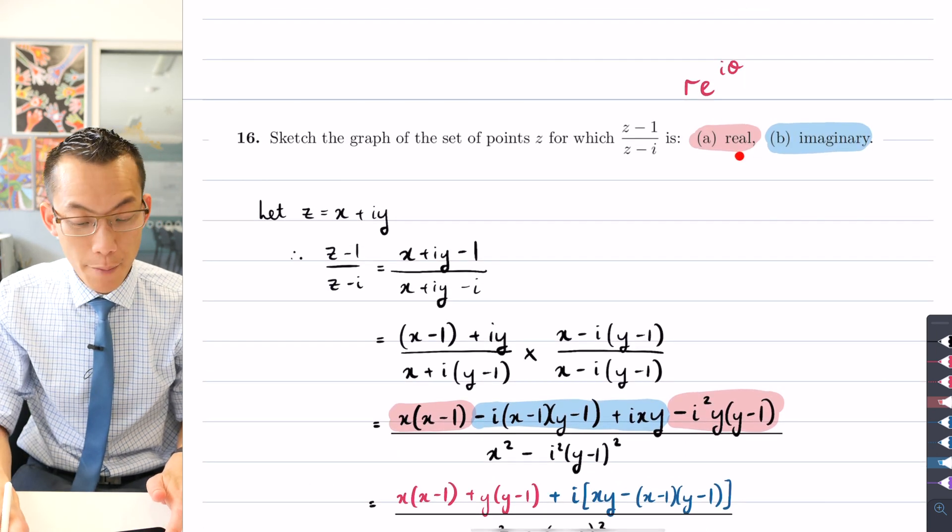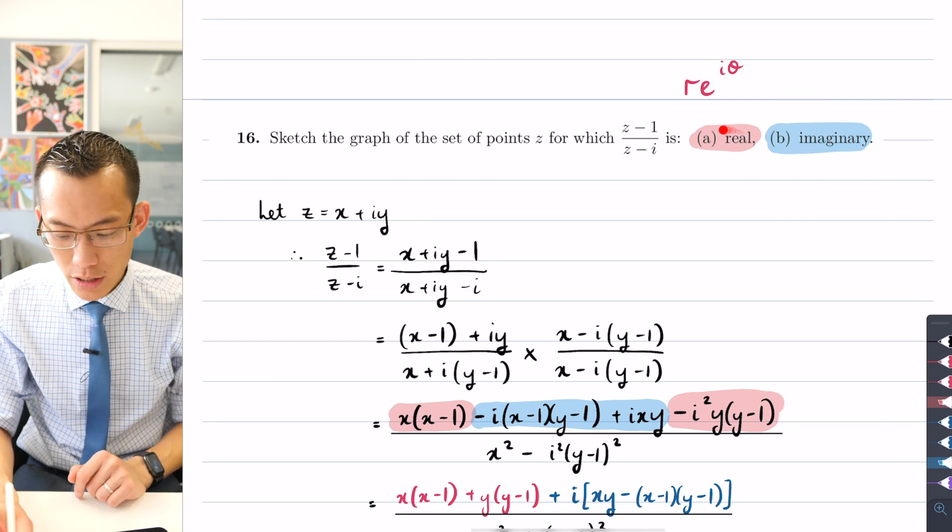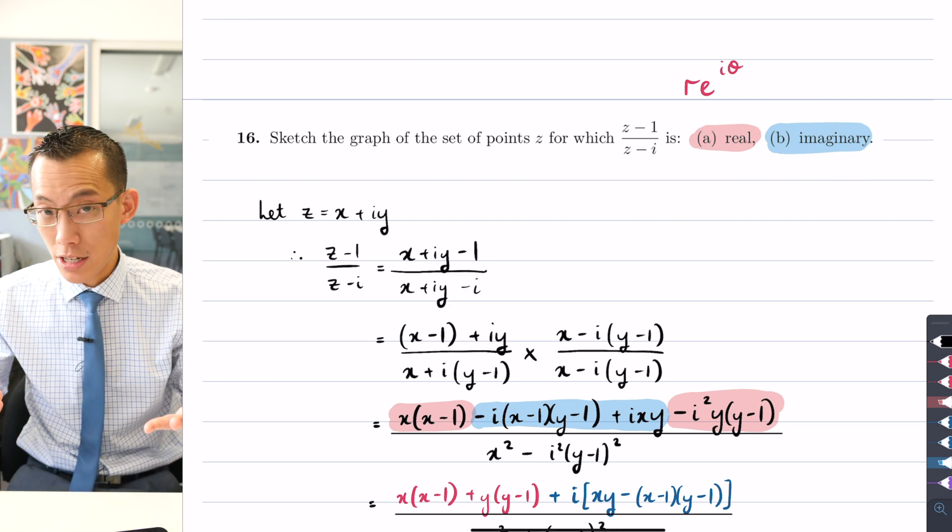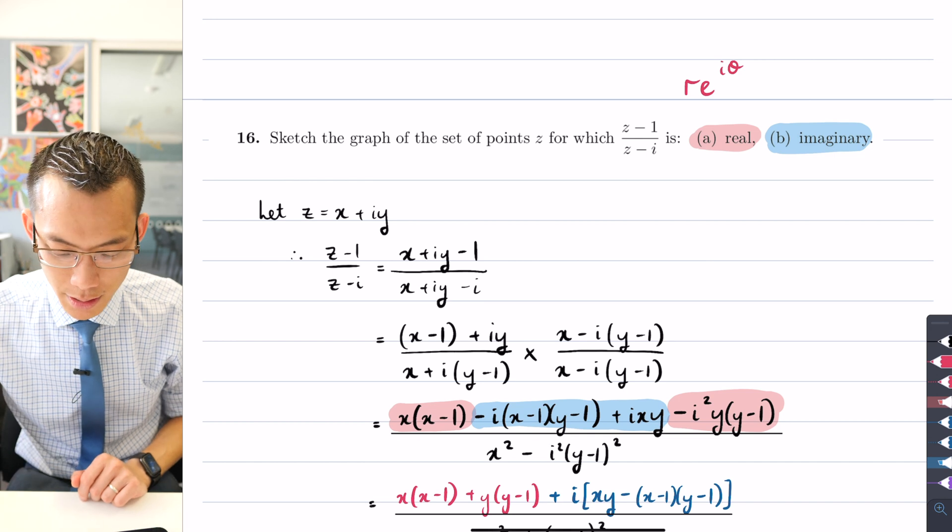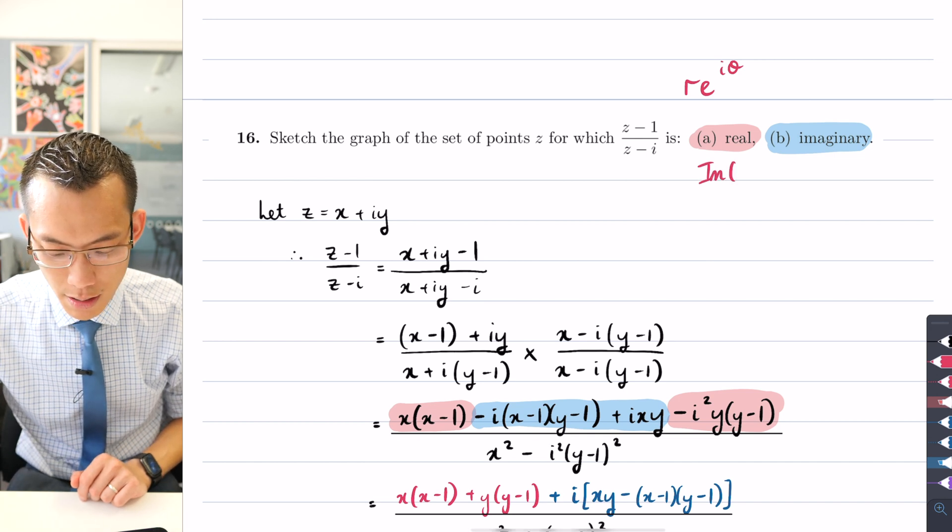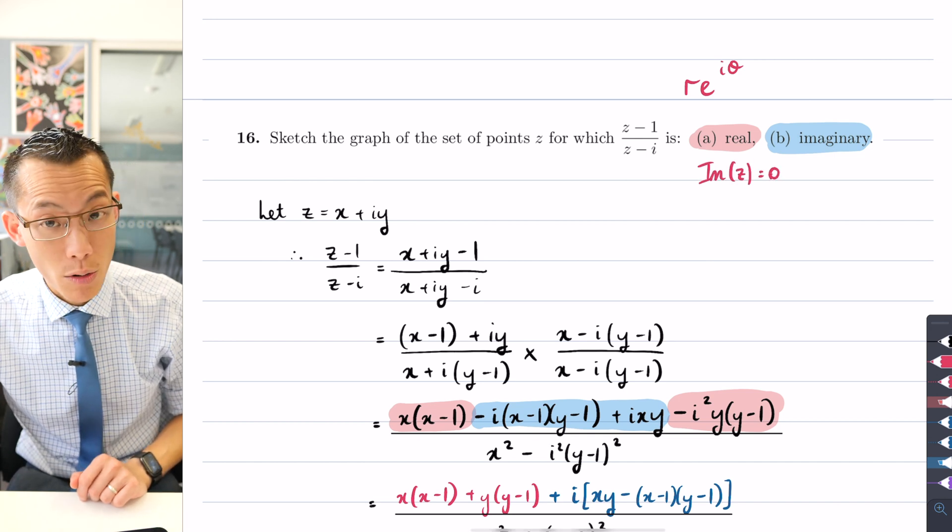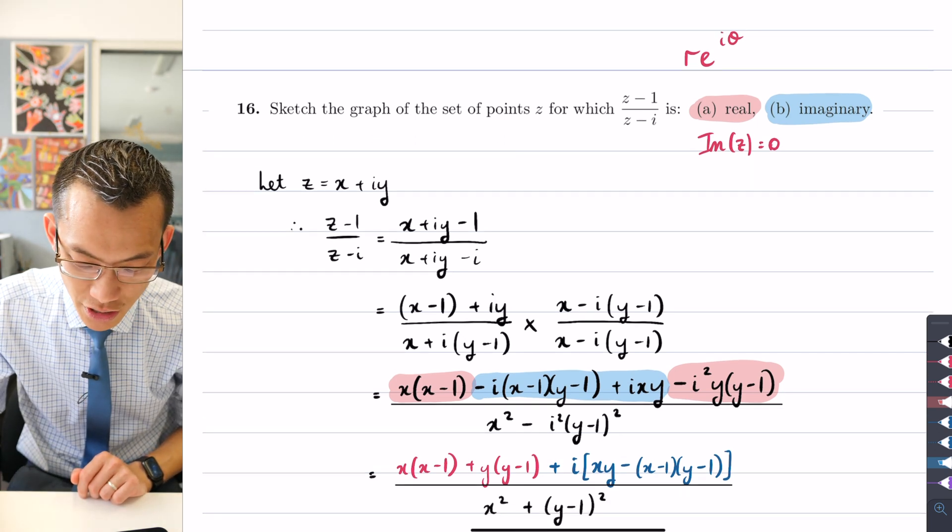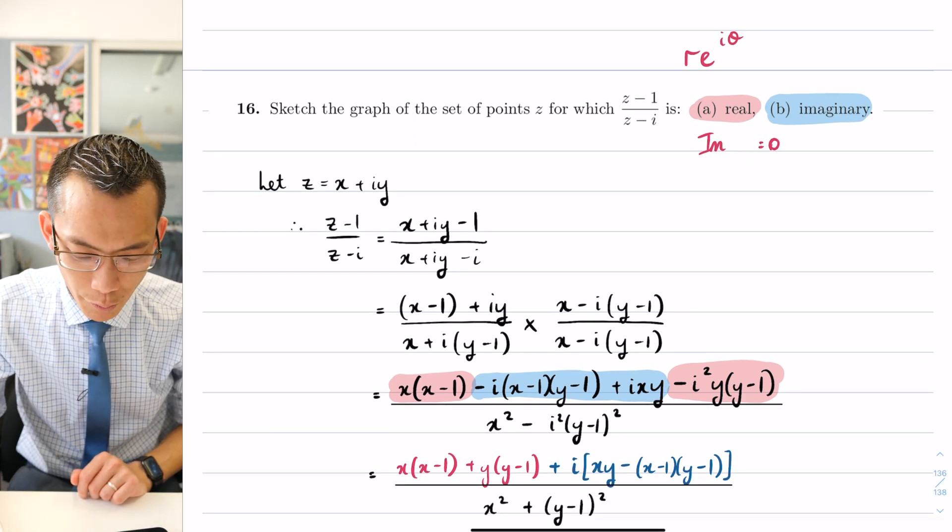Now I've got all this working was just so that I could separate out the real part from the imaginary part. Because remember, if something is going to be real, then the condition for that is that, I'll use the same colors, the imaginary part here is going to have to be zero.